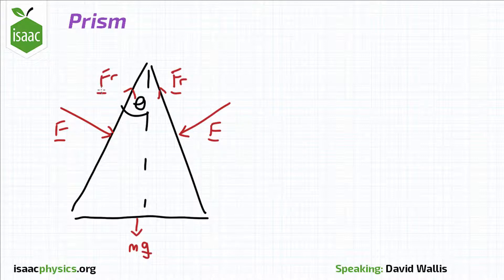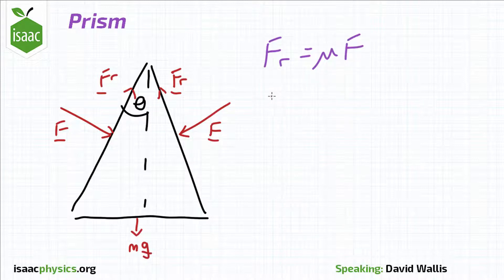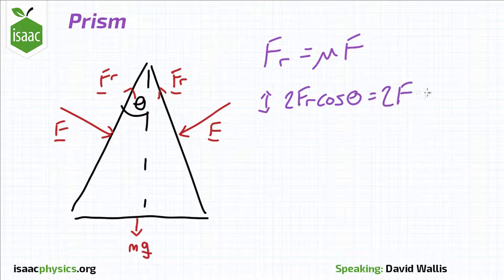By Newton's third law, the reaction force due to the prism on the finger must equal F, so Fr equals mu F. Resolving vertically gives 2Fr cos theta equals 2F sin theta plus mg. It is now easy to find F.